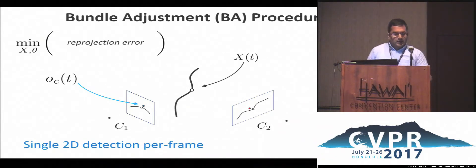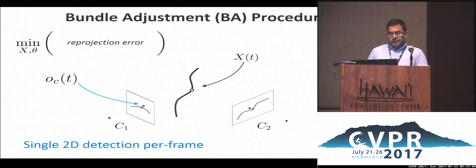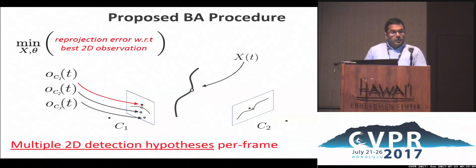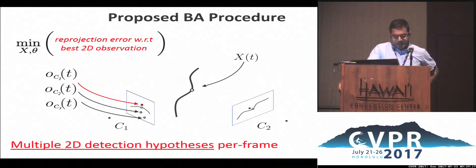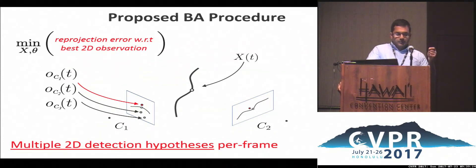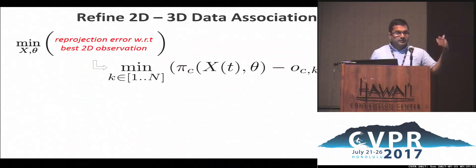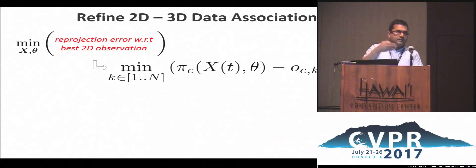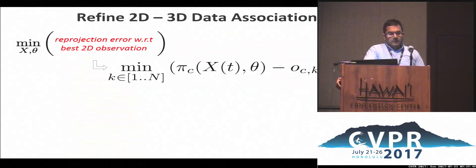Using standard bundle adjustment, you would take single 2D detections from every frame and minimize the standard reprojection error metric. What we do instead is store multiple 2D detections per frame. When doing the bundle adjustment, you compare the reprojection error with respect to each one of these hypotheses and pick the best one — the one that gives the lowest reprojection error. To compute that reprojection error on a single frame, there's a small optimization problem to solve. The main advantage is we can refine the association on every iteration, making the system more resilient to errors made in the initial single-view video tracking.